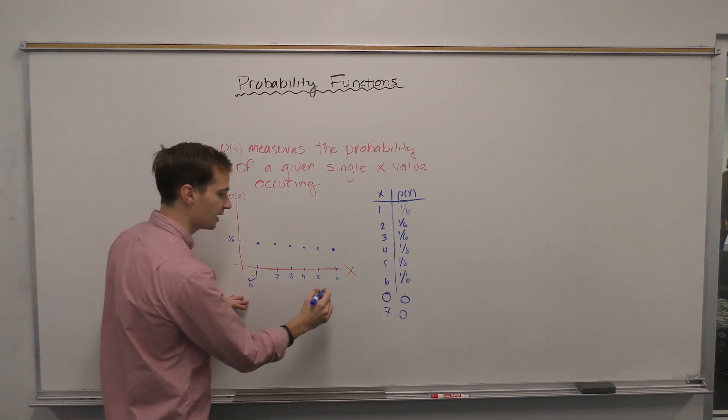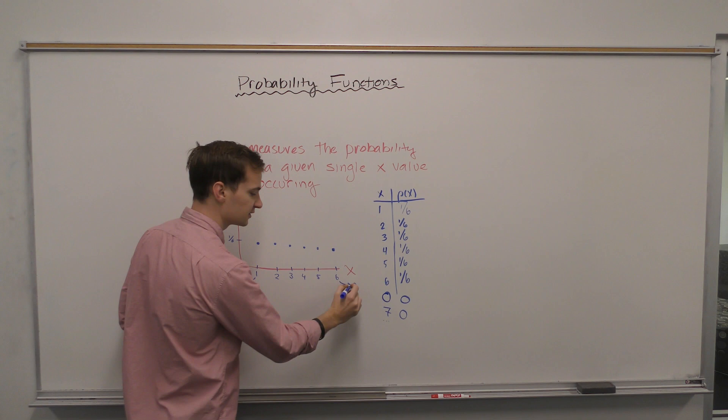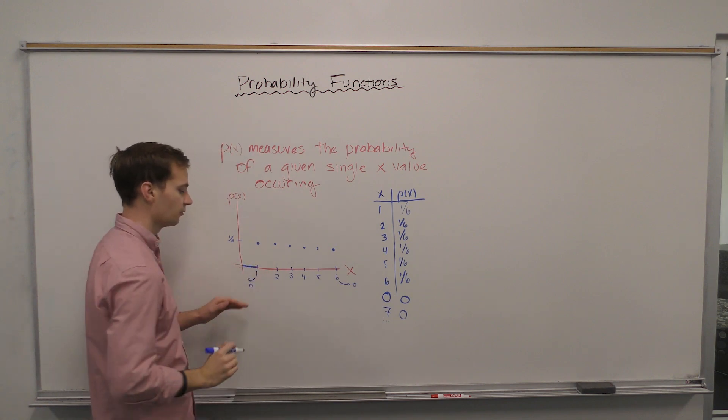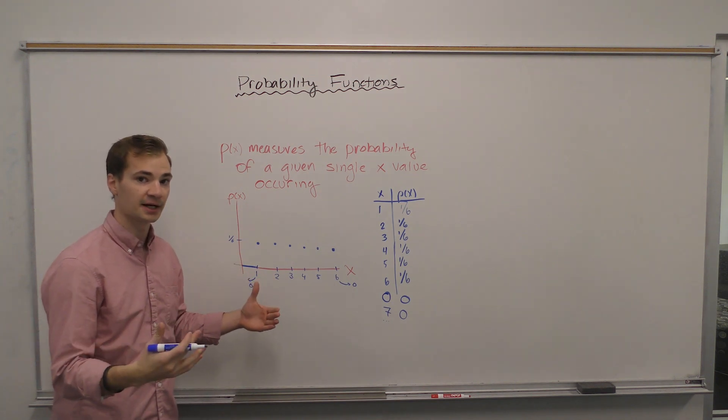Now that tells us anything left of one is going to be a zero value and anything greater than six is also going to be a zero value. So we can now draw our lines on this graph.